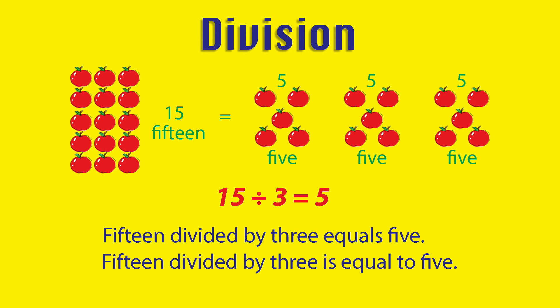Division: 15 divided by 3 equals 5. 15 divided by 3 is equal to 5.